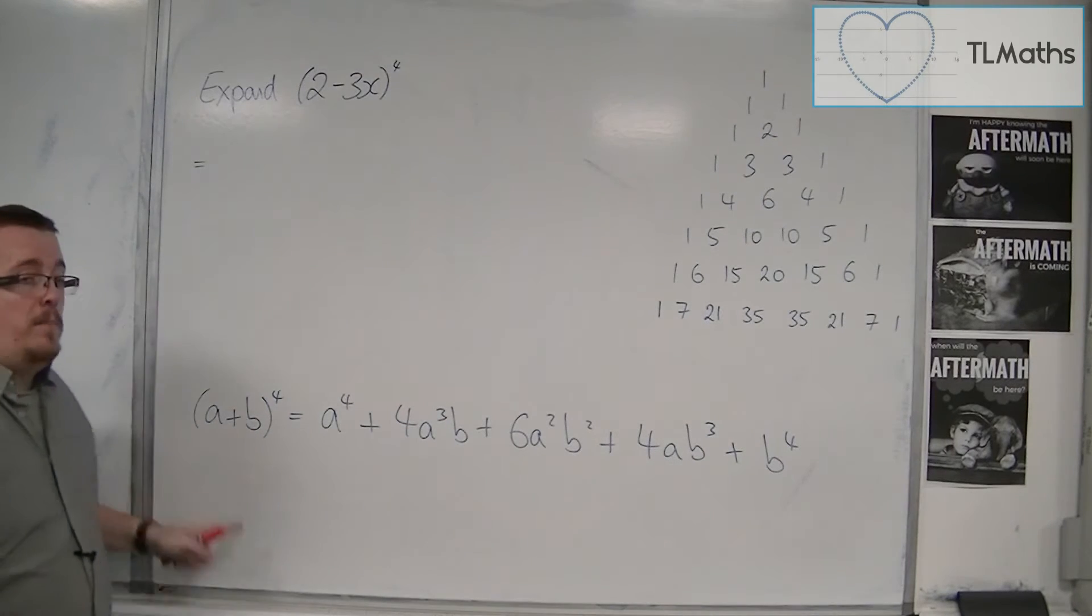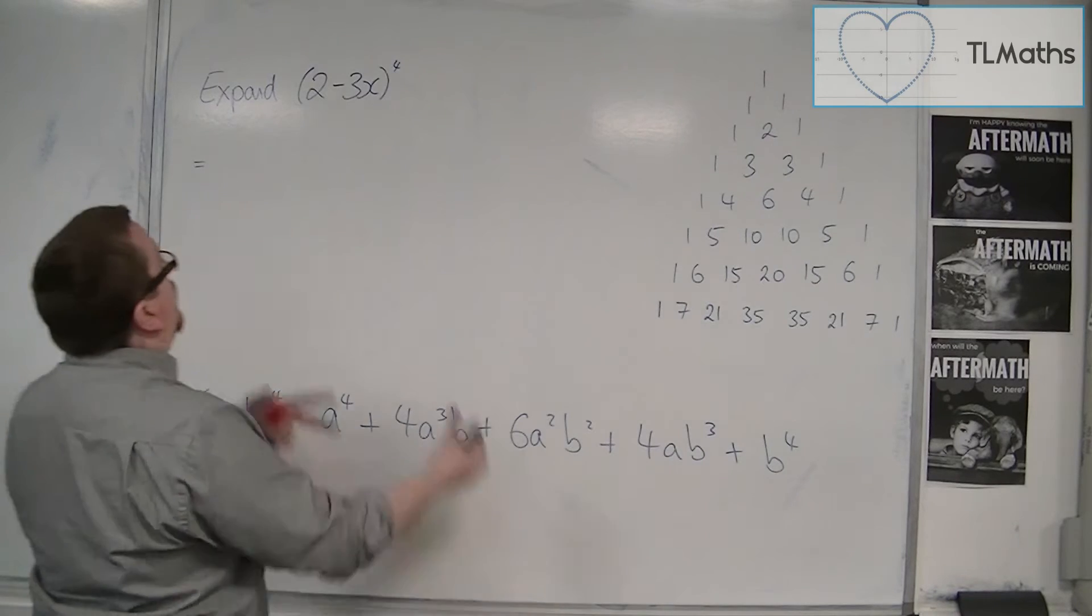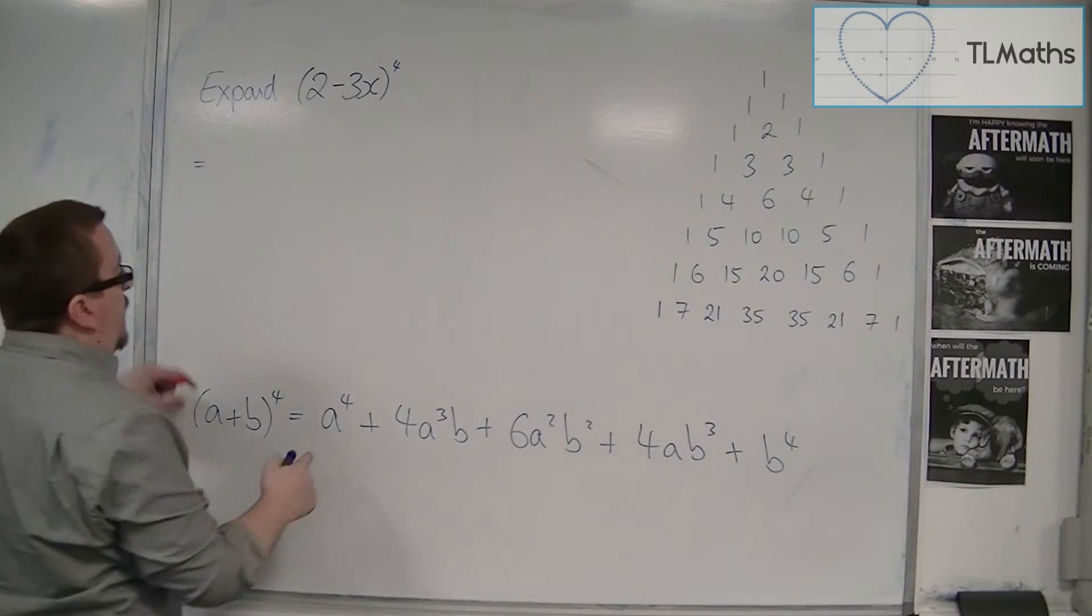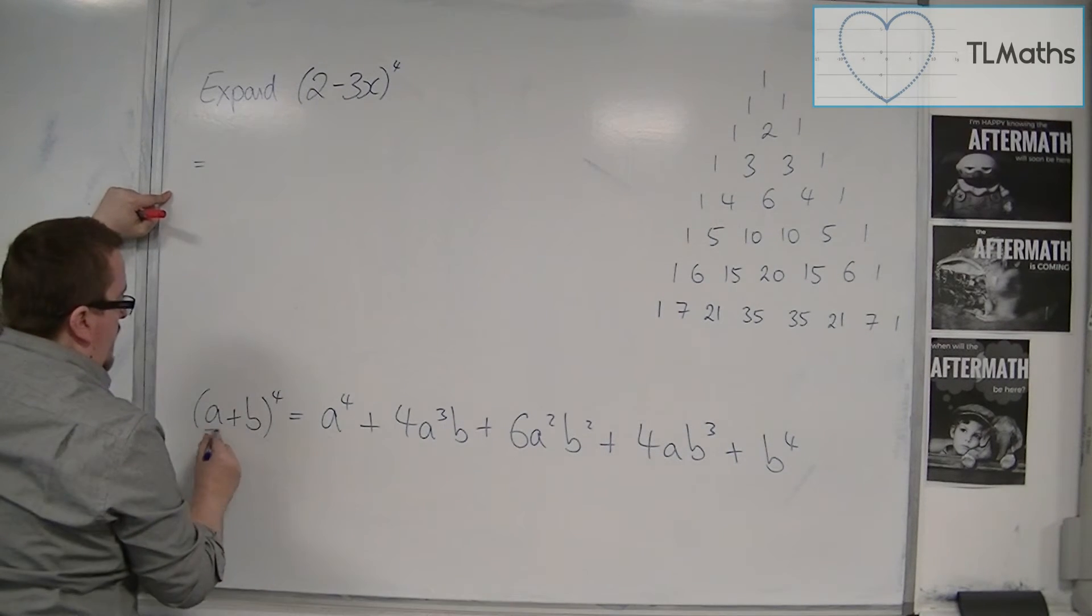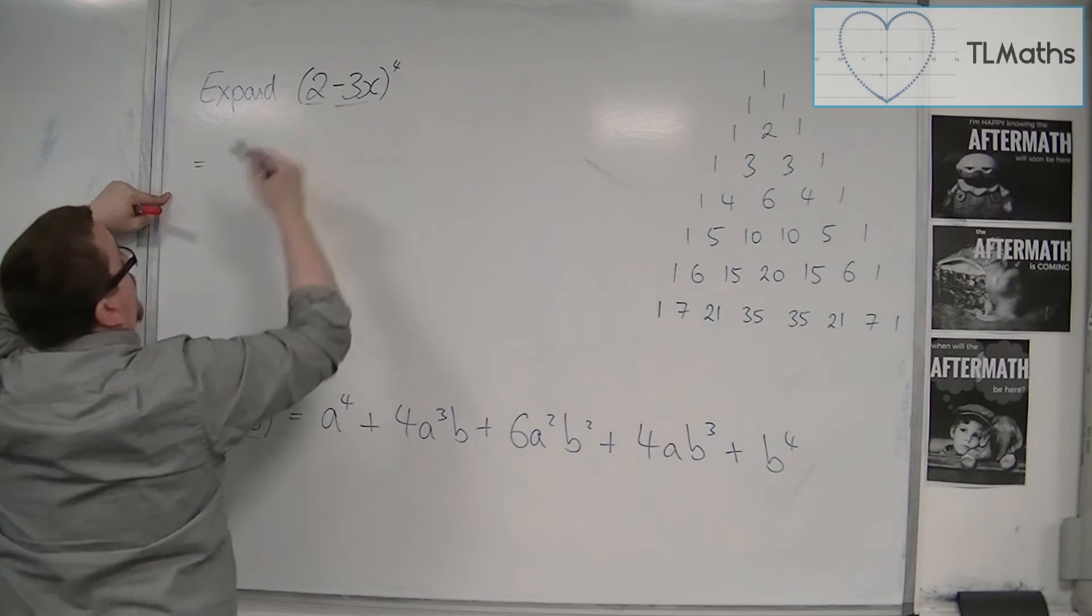So that's what I get when I expand a plus b to the 4. And I'm going to use this pattern to expand 2 minus 3x to the 4. So I start off with 2 to the power of 4. That's my a now. That's a, that's the 2, and the b is the minus 3x.